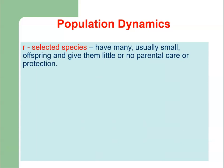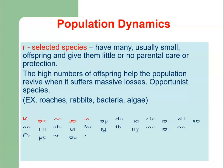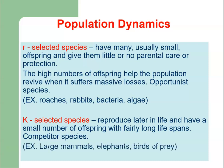R-selected species have many, usually small, offspring and give them little or no parental care. The high numbers of offspring help the population revive when it suffers massive losses. Examples include rabbits, bacteria, and algae. K-selected species reproduce later in life, have a small number of offspring with fairly long life spans, and include large mammals such as elephants and birds of prey.